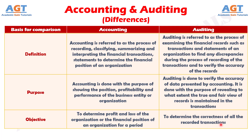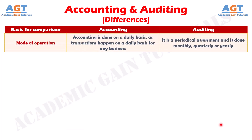Number four: Accounting is done on a daily basis, as transactions happen on a daily basis for any business. Whereas auditing is a periodical assessment and is done monthly, quarterly, or yearly.